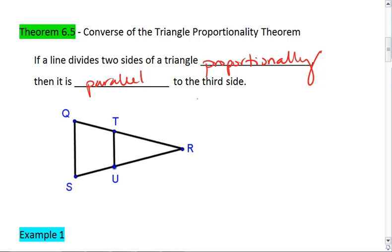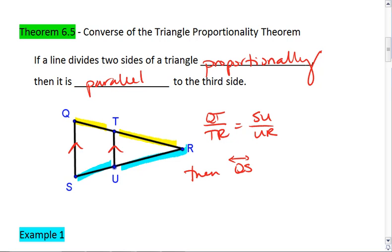So if we have it such that QT to TR is proportional to SU to UR, so QT to TR is proportional to SU to UR, then it must be that QS is parallel to TU.